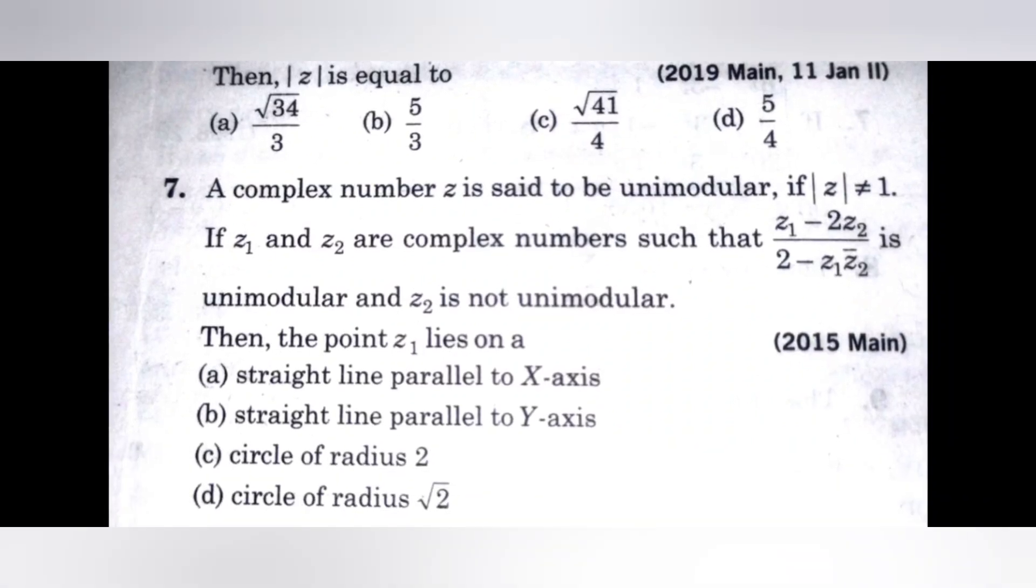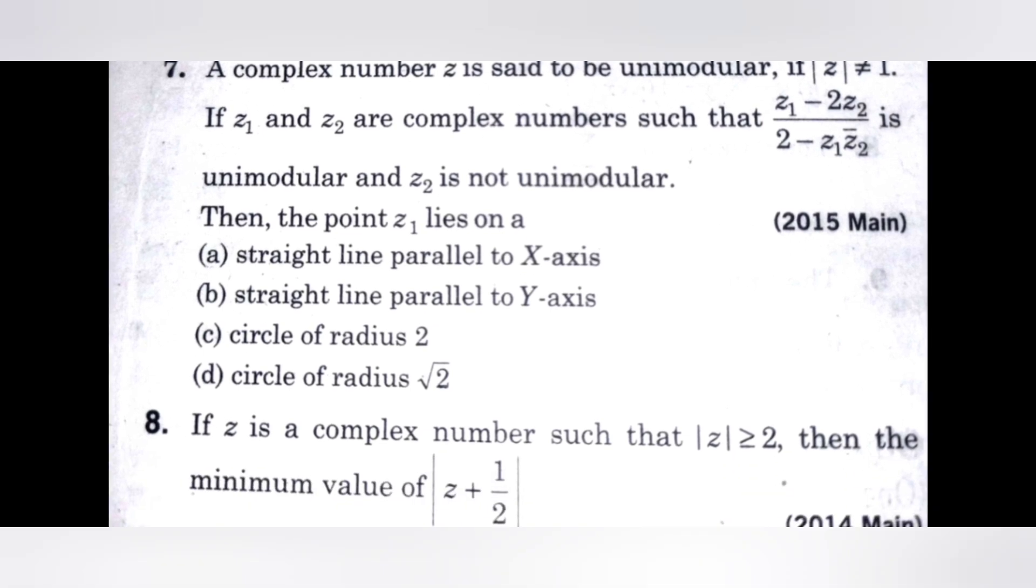Next question. A complex number Z is said to be unimodular if mod Z equals 1. If Z1 and Z2 are complex numbers such that Z1 minus 2Z2 by 2 minus Z1 times Z2 bar is unimodular and Z2 is not unimodular, then the point Z1 lies on a. Check the options A, B, C, D.